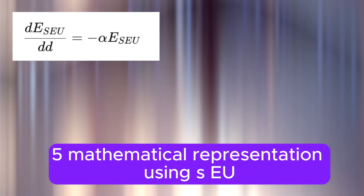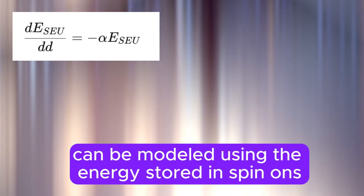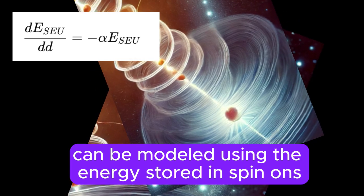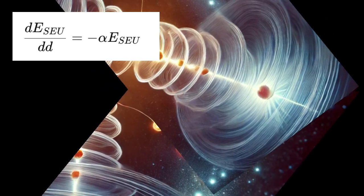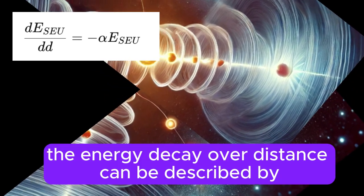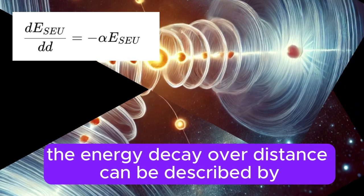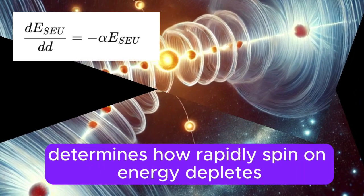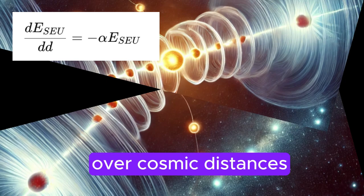Mathematical representation using SEU: The length of light propagation can be modeled using the energy stored in spin-ons as follows. The energy decay over distance can be described by the decay constant, which determines how rapidly spin-on energy depletes over cosmic distances.